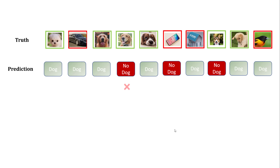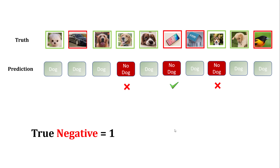Here I will compare all three 'no dog' predictions with reality. Two of these predictions are right and one is wrong, so true negative is one. The second word 'negative' means your negative class, which is 'no dog', and out of these three predictions only one was true — that's why true negative is one.